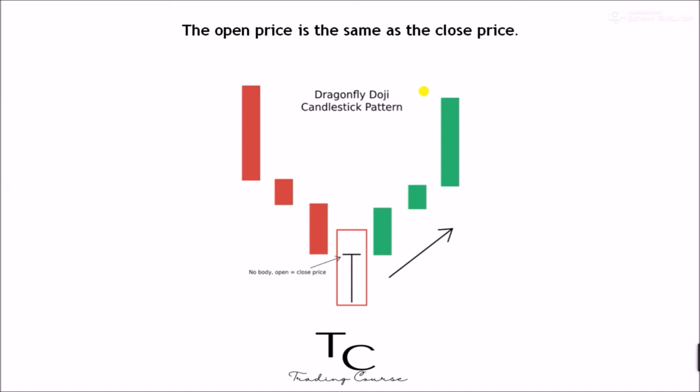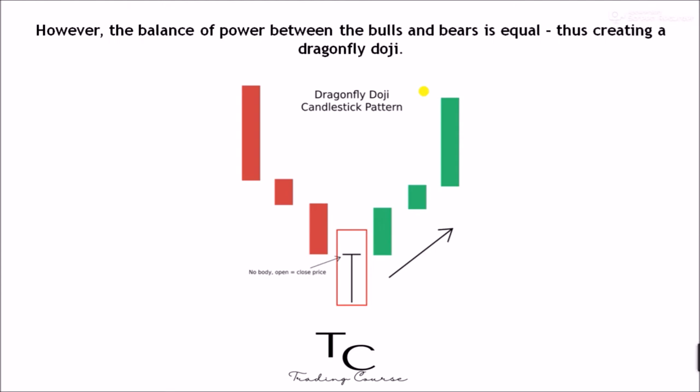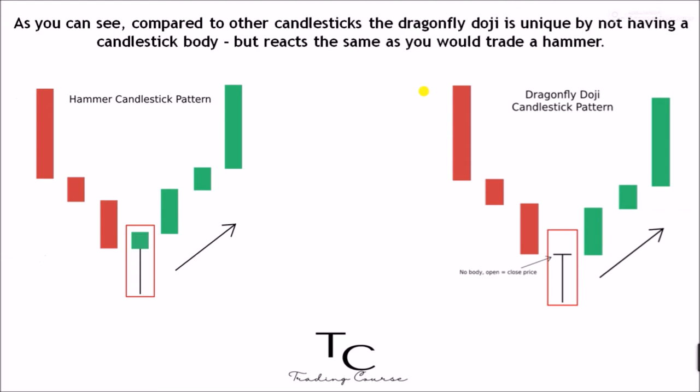During the trading session, the bears managed to pull the price down lower, generating a session low, then it aggressively moves back up caused by a rush of bulls. However, the balance of power between the bulls and bears is equal, thus creating a dragonfly doji. Compared to other candlesticks, the dragonfly doji is unique by not having a candlestick body, but reacts the same as you would trade a hammer.